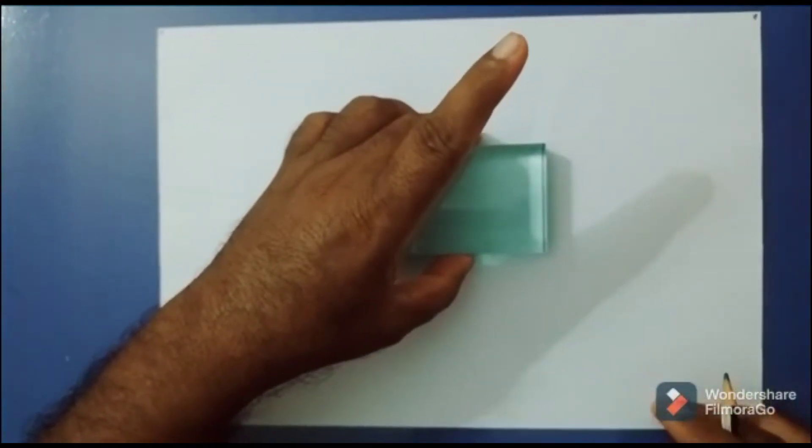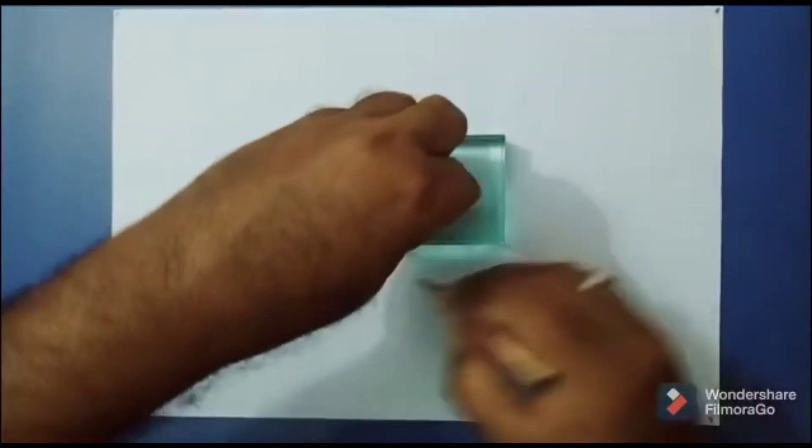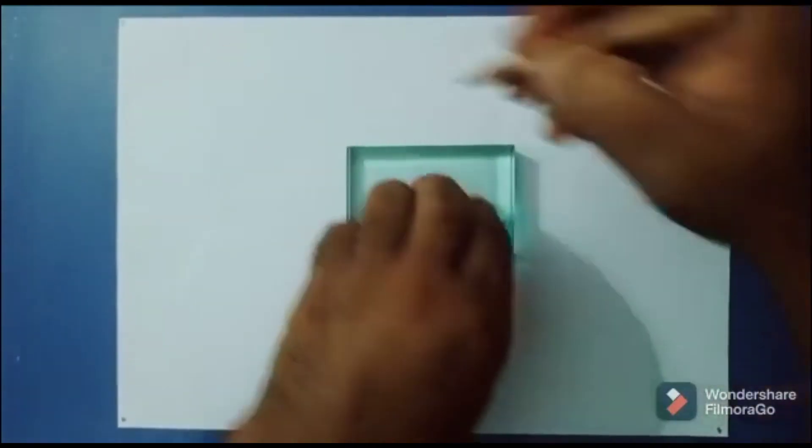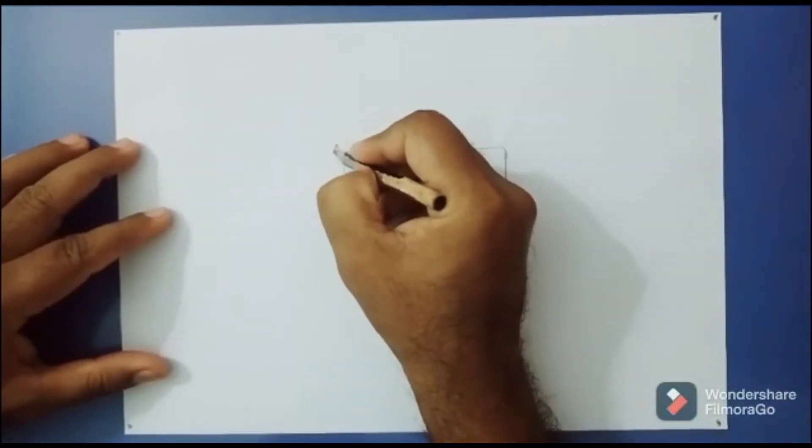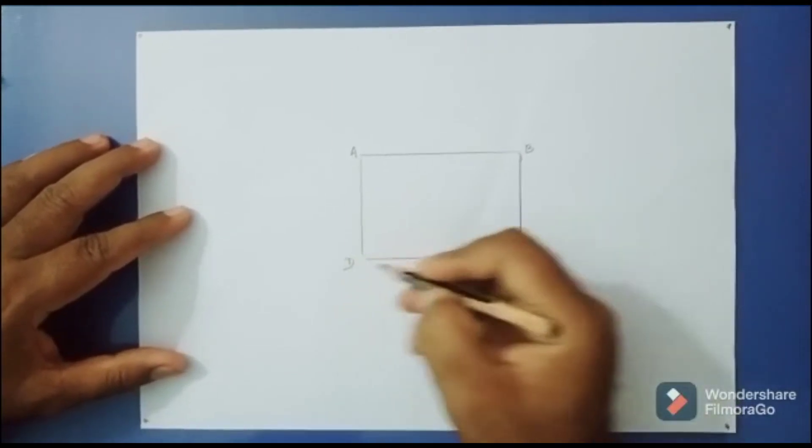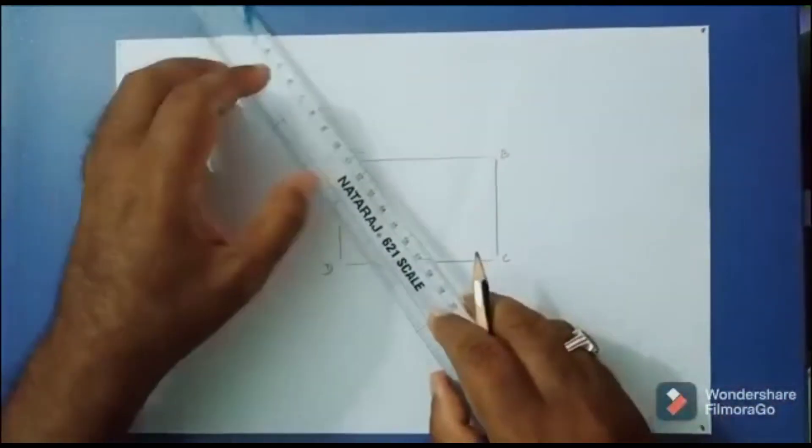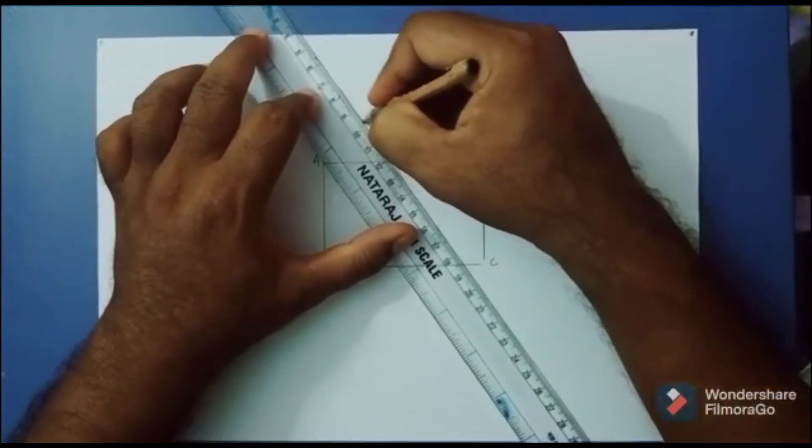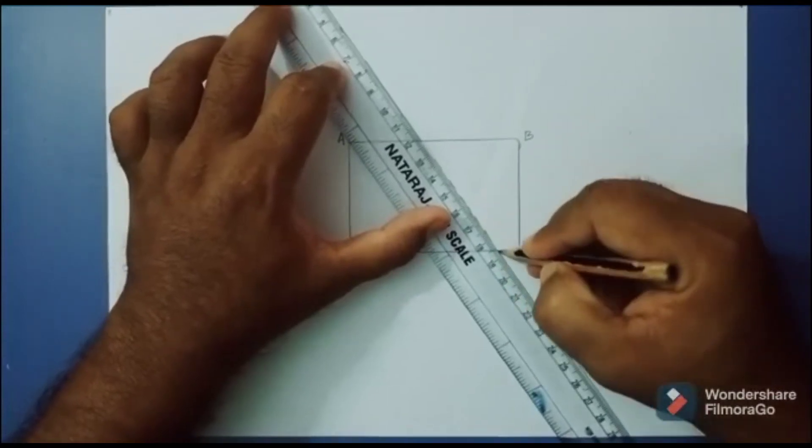Now remove the glass slab. Label the vertices as A, B, C, and D. To this side AB, draw an incident ray. Continue the same on the other side with the dotted line.